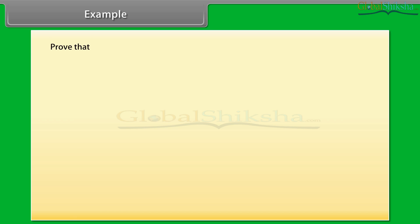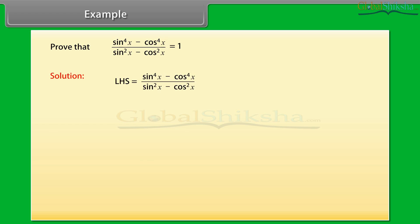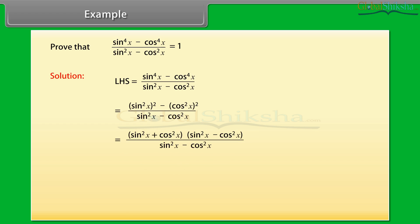Example 2: Prove that sin raised to the power 4x minus cos raised to the power 4x, whole upon sin square x minus cos square x, is equal to 1. On solving the left-hand side, which is sin⁴x minus cos⁴x, whole upon sin square x minus cos square x, we get 1, and this is equal to the right-hand side. Hence, sin⁴x minus cos⁴x, whole upon sin square x minus cos square x, is equal to 1.